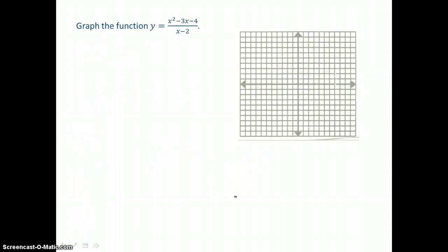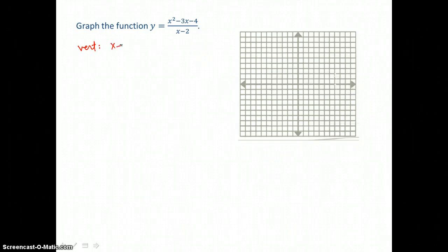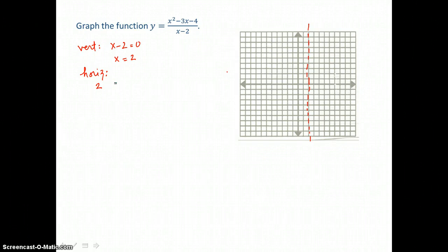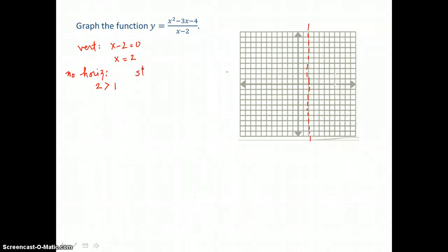One more graph: y equals x squared minus 3x minus 4 over x minus 2. We'll look for a vertical asymptote by setting that denominator, x minus 2, equal to 0 and solving for x, so we get x equals 2 for a vertical asymptote. Then we'll check for a horizontal asymptote by comparing those degrees. The degree of the top polynomial is 2, and the degree of the bottom polynomial is 1. Since the degree of the top is 1 more than the degree of the bottom, we have no horizontal asymptote, but we do have a slant asymptote to find.